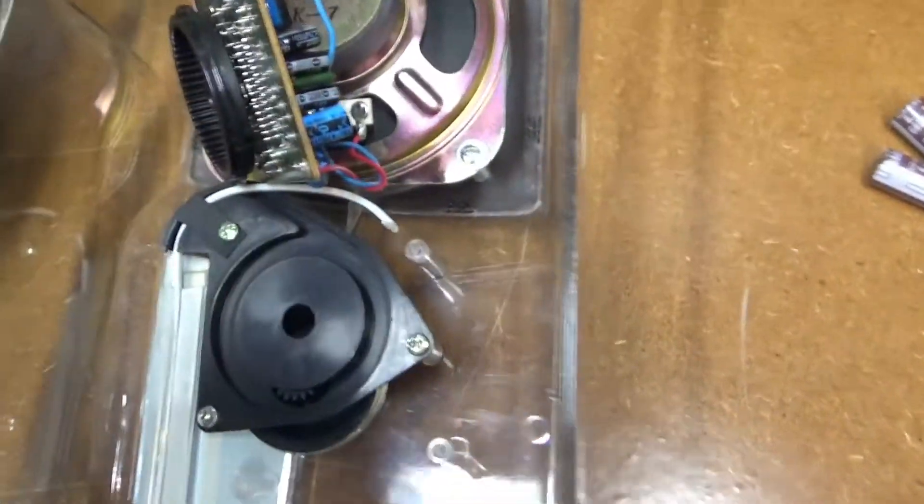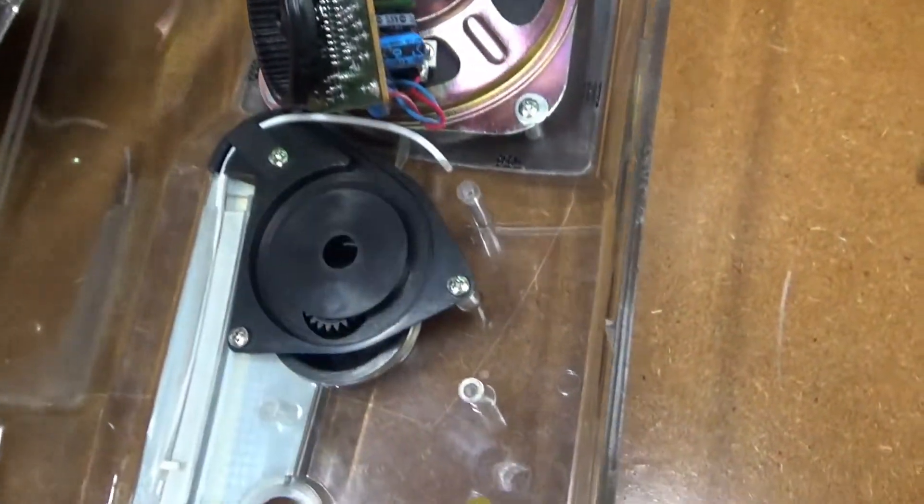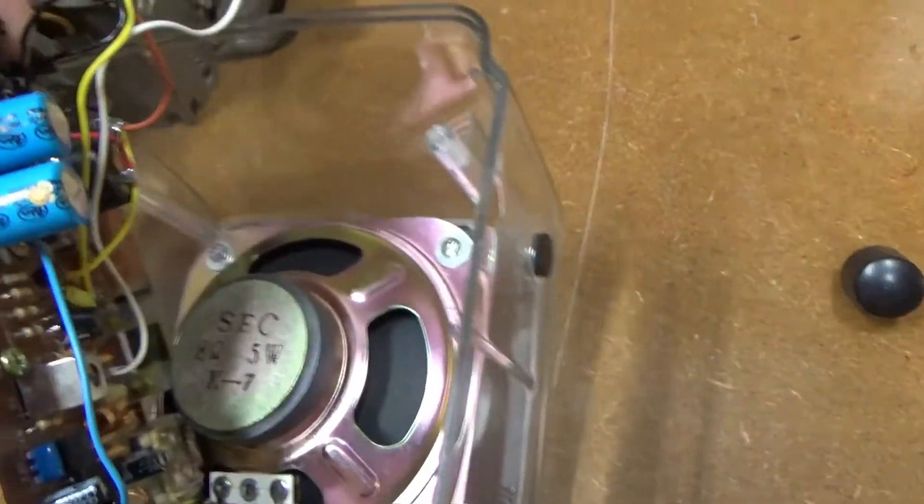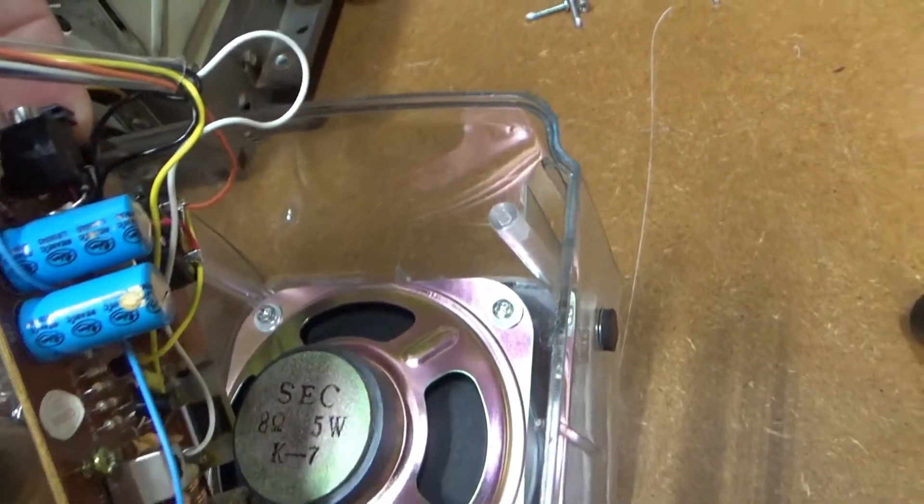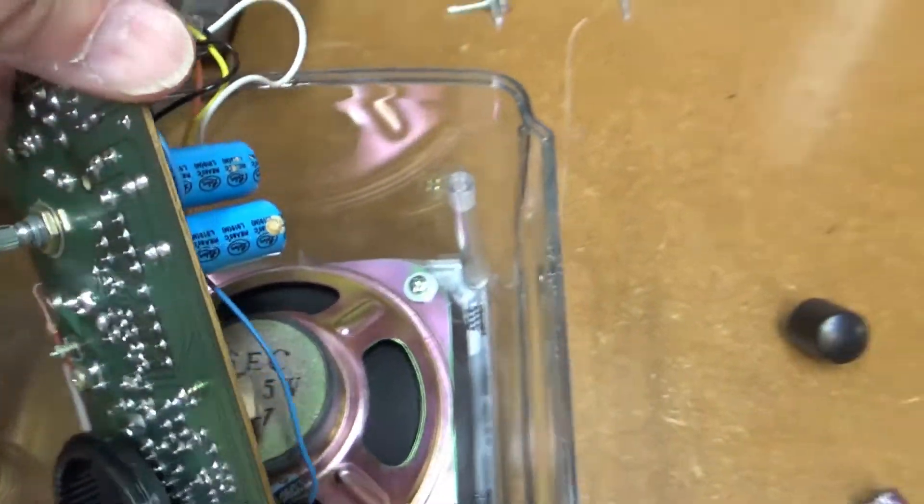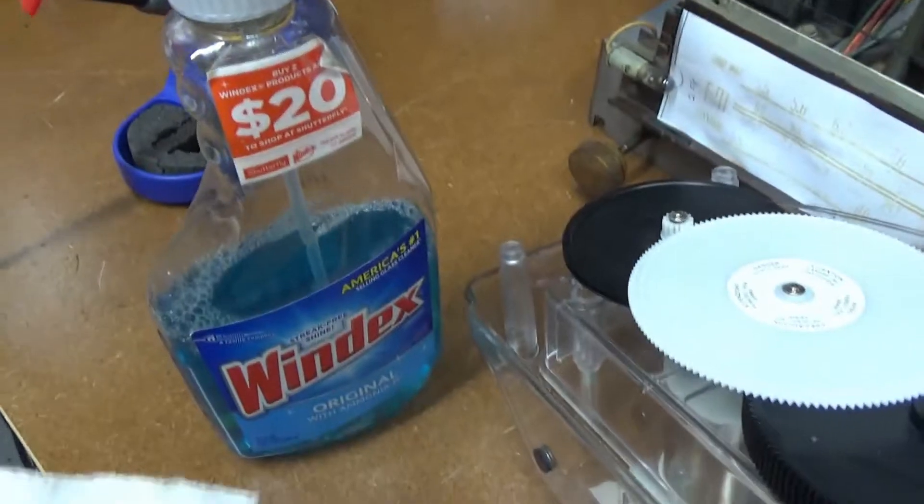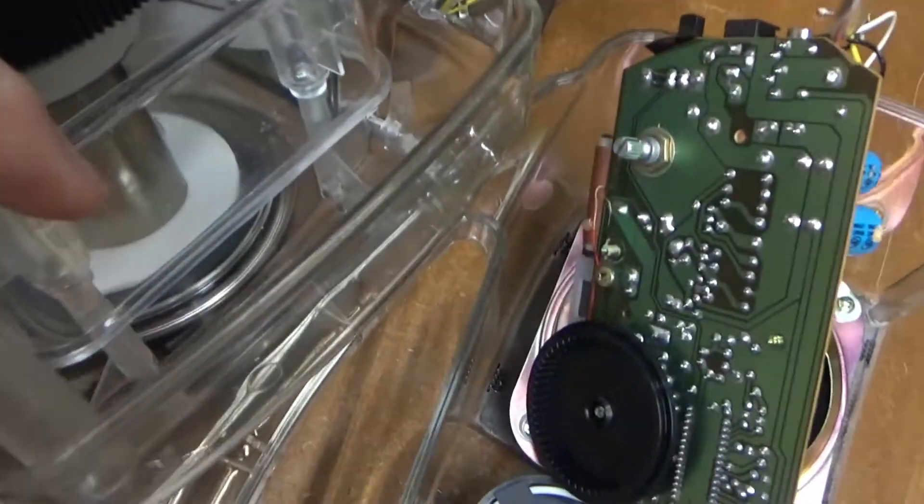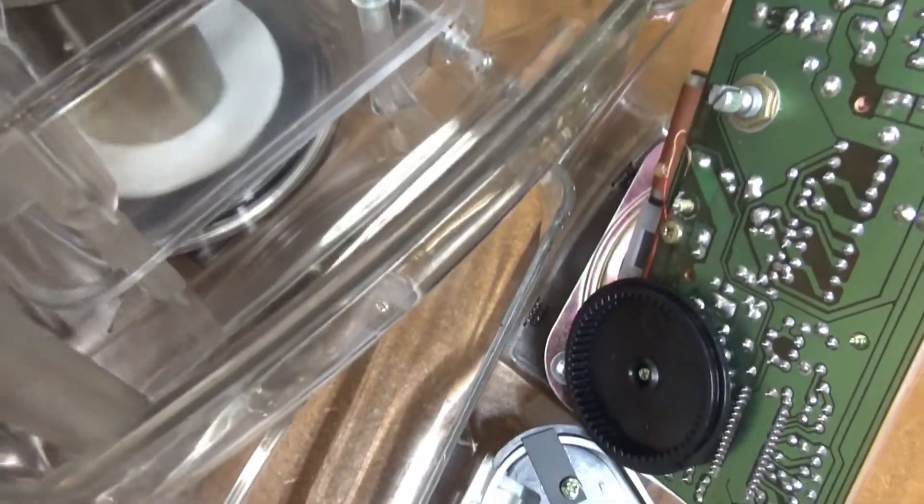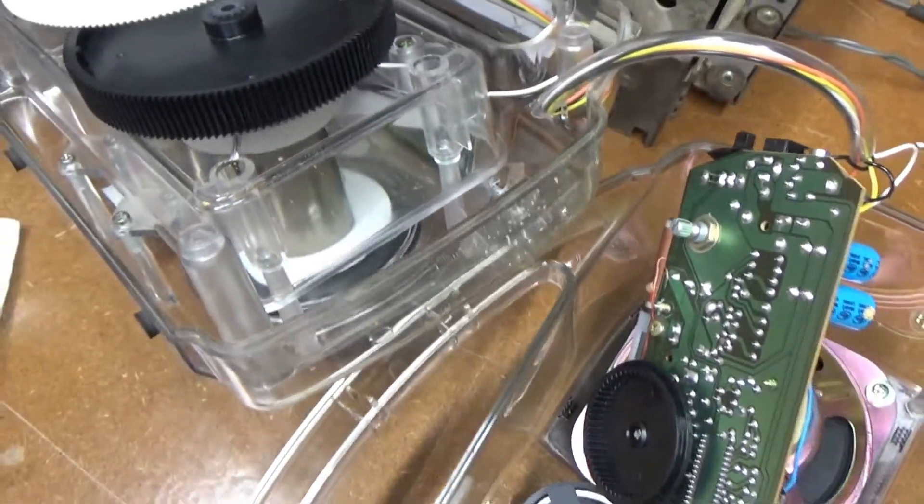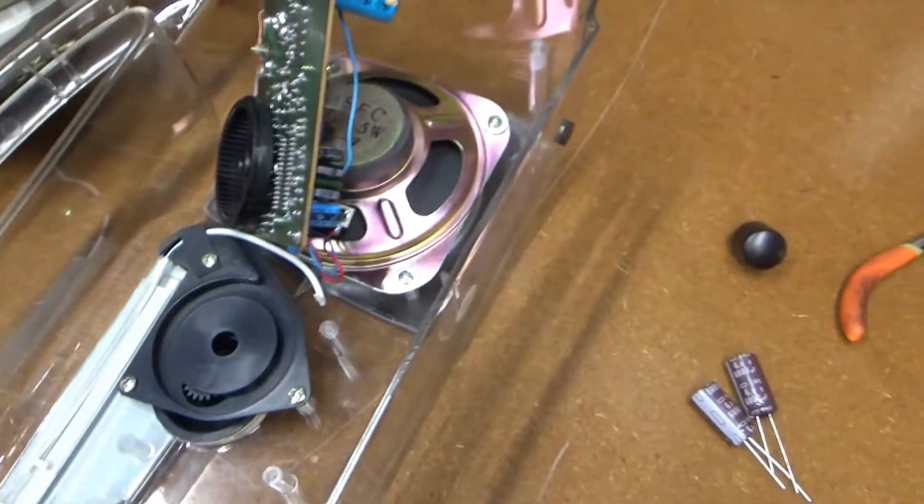I just pulled the volume control knob off the front of the radio and undid a few screws and the radio board came right out. There's the two bad capacitors right there. I'll just unsolder them. And I took a little bit of Windex and paper towel and cleaned up the capacitor guts that spilled out since this is a clear radio and you can see that from the outside. Make it look a little bit better.